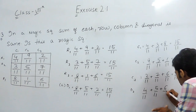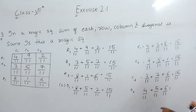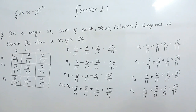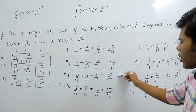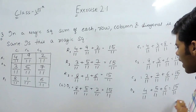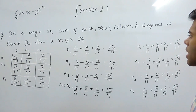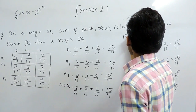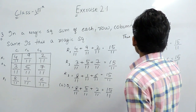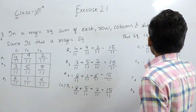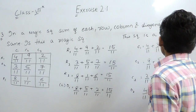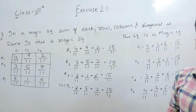For the diagonals: 6 plus 4 is 10 and 10 plus 5 is 15, so again it will be 15 upon 11. Now you can see that all the rows, all the columns, and all the diagonals have the same sum. So we can say that this square is a magic square, and this is how you can solve this question.